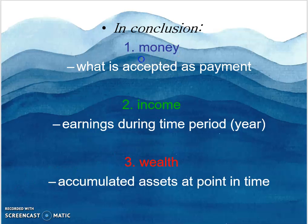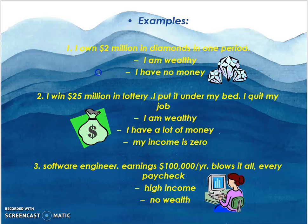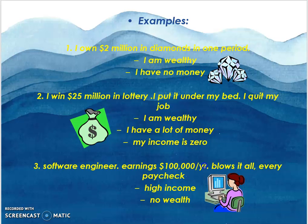In conclusion, money is what is accepted as payment; income is earnings during a period of time; and wealth is accumulated assets at a point in time. For example, owning 2 million in diamonds means you are wealthy but have no money. Winning 25 million in a lottery, putting it under your bed, and quitting your job means you are wealthy with a lot of money but zero income. A software engineer earning 100,000 per year who spends it all every paycheck has a high income but no wealth.